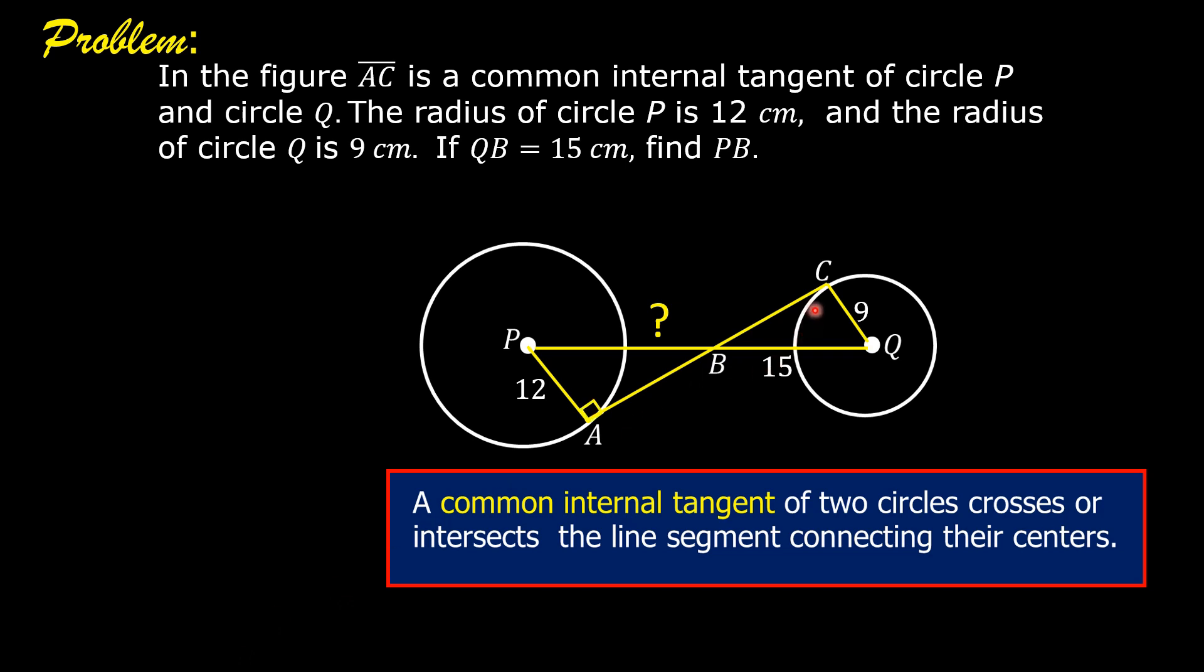It is also perpendicular to radius CQ of circle Q at point C. And therefore, angle QCB is also a right angle.